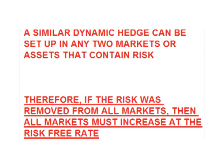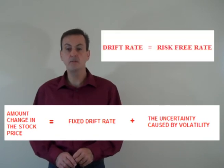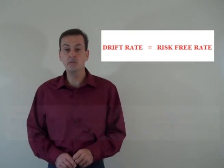Therefore, since the risk is removed, the total position must increase at the same rate as a fixed risk-free investment. Furthermore, since we can set up a similar dynamic hedge using any two markets, it is given that if we could remove the risk from all markets, then all markets must increase at the risk-free rate. The no riskless arbitrage argument proves that the drift rate is the risk-free rate, and it is this proof that is the center point of the awarding of the Nobel Prize in economics to the developers of the Black-Scholes formula in 1998. In my next video, I will discuss the two driving forces of price.